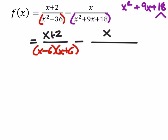I just need two factors of 18 that will add up to 9. Looks like it's going to be 3 and 6, so that's going to factor out into x plus 3 and x plus 6.